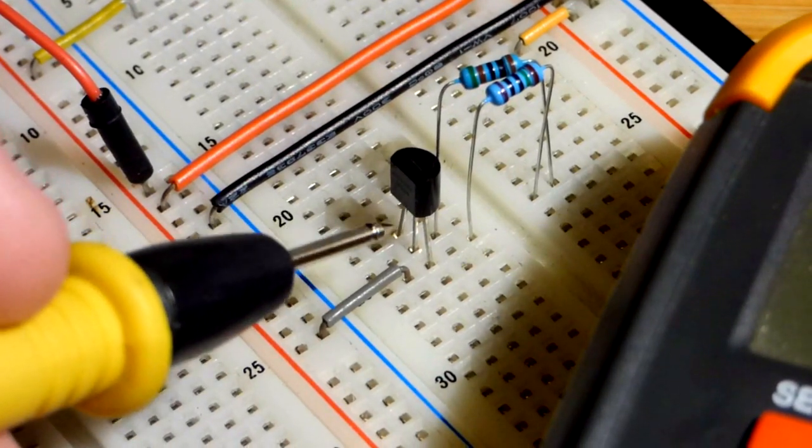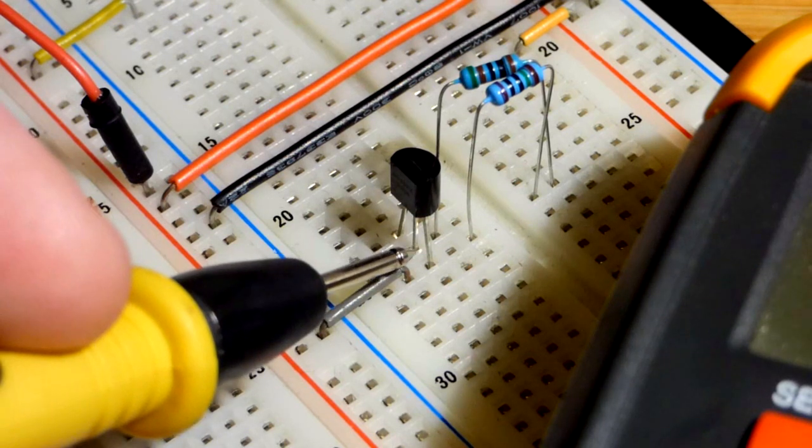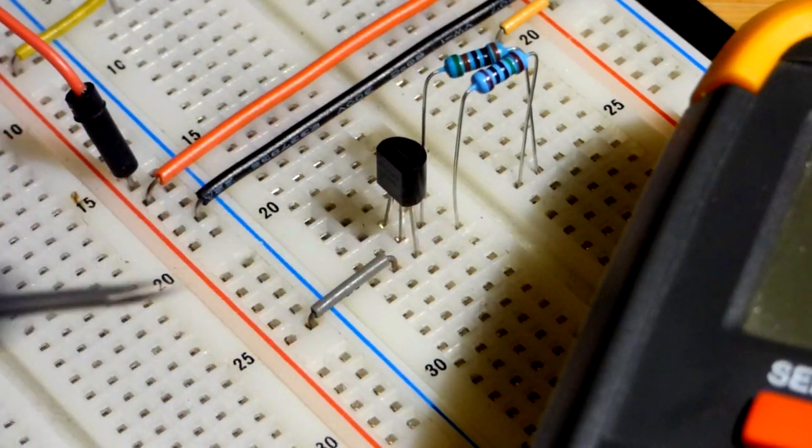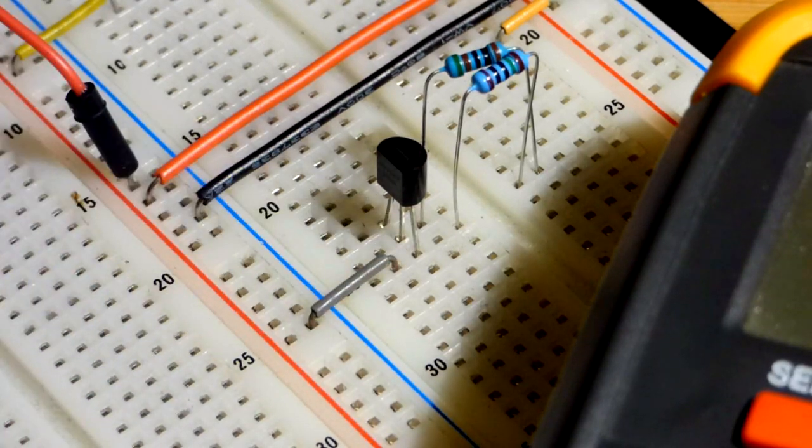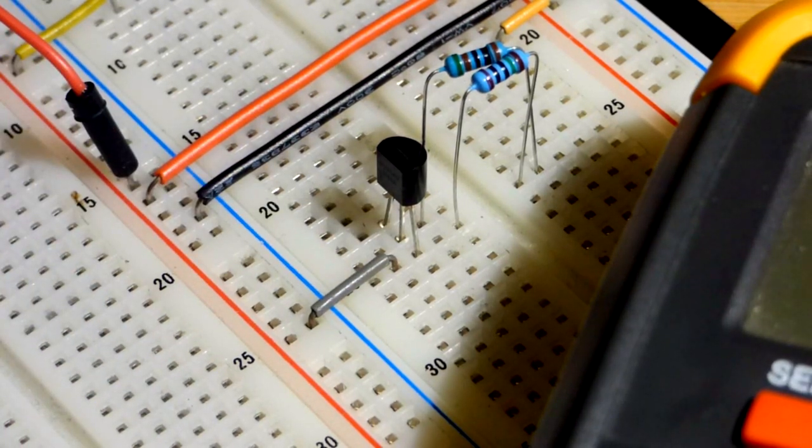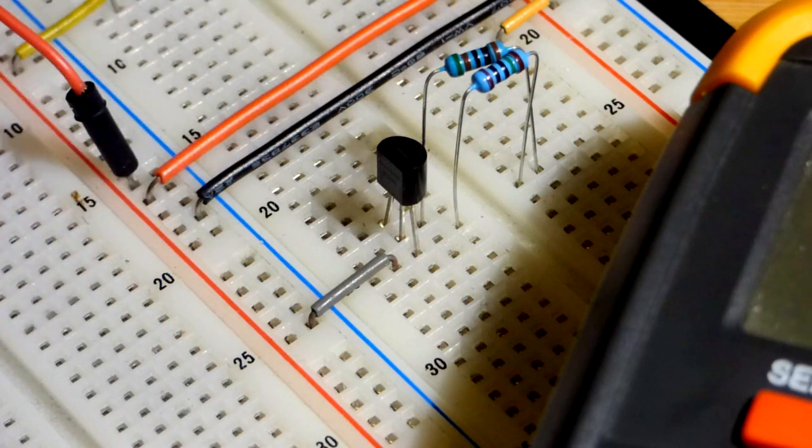And so you put a resistance between R and V minus and it sets the current, and it doesn't matter what the voltage is coming through. The temperature of the component though does matter. As it heats up more current is going to go through, and if it's cooler a little less current, but it's not a drastic change.